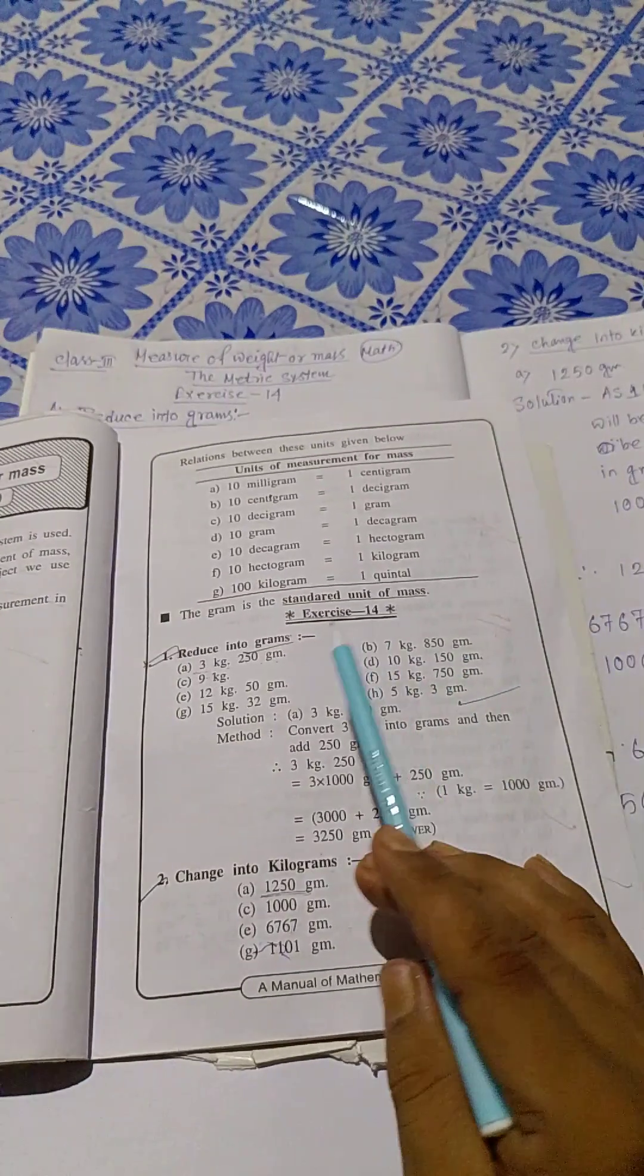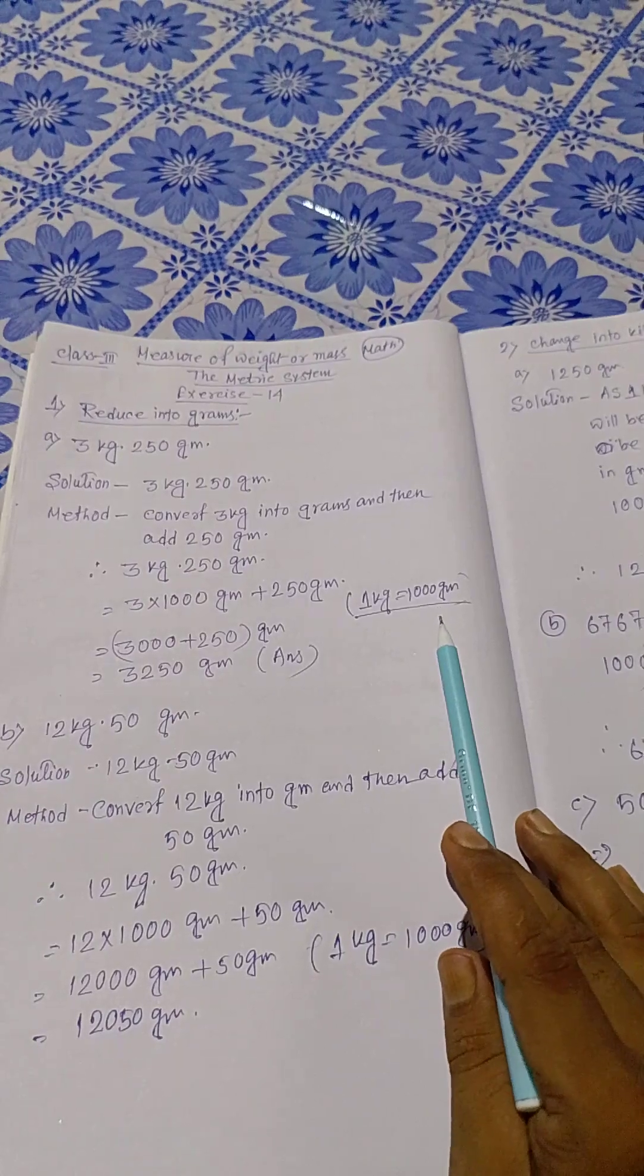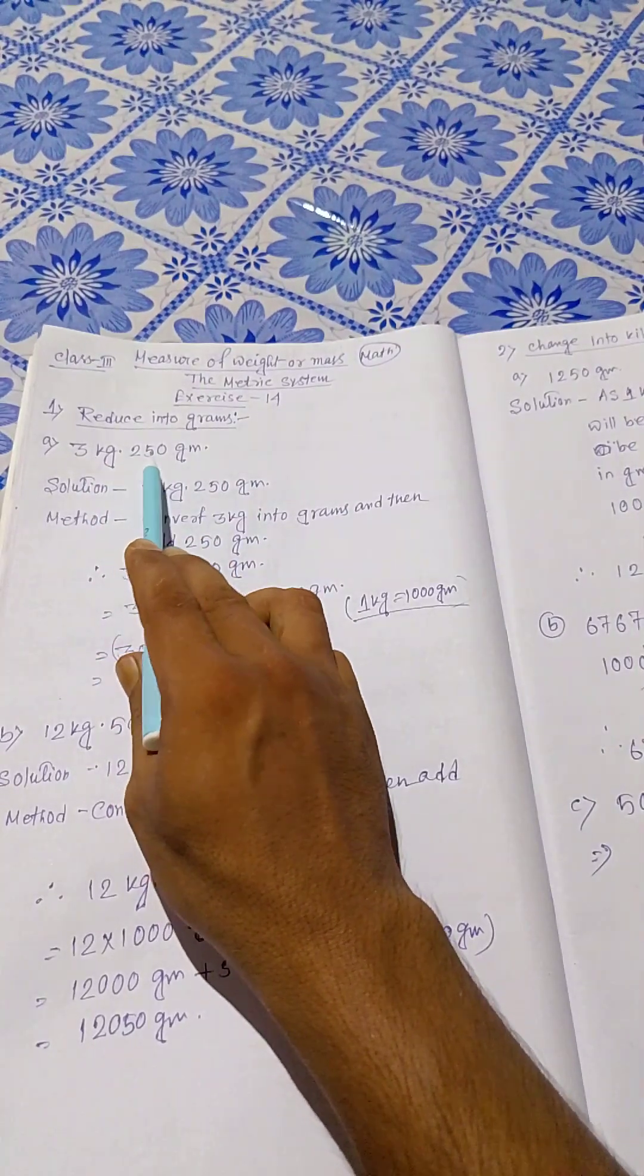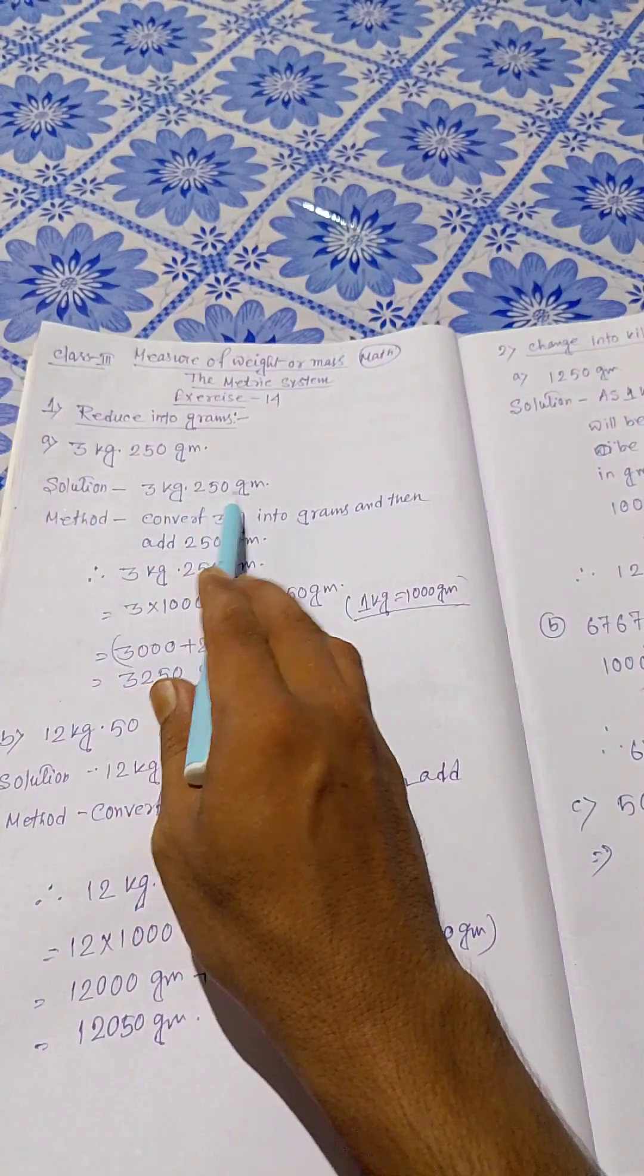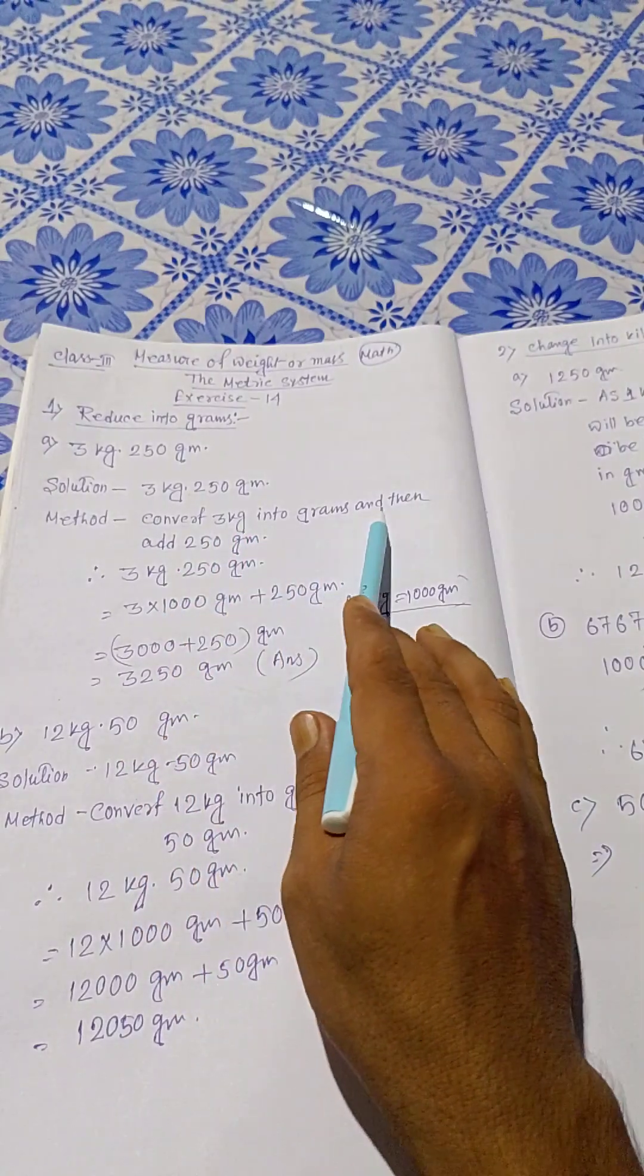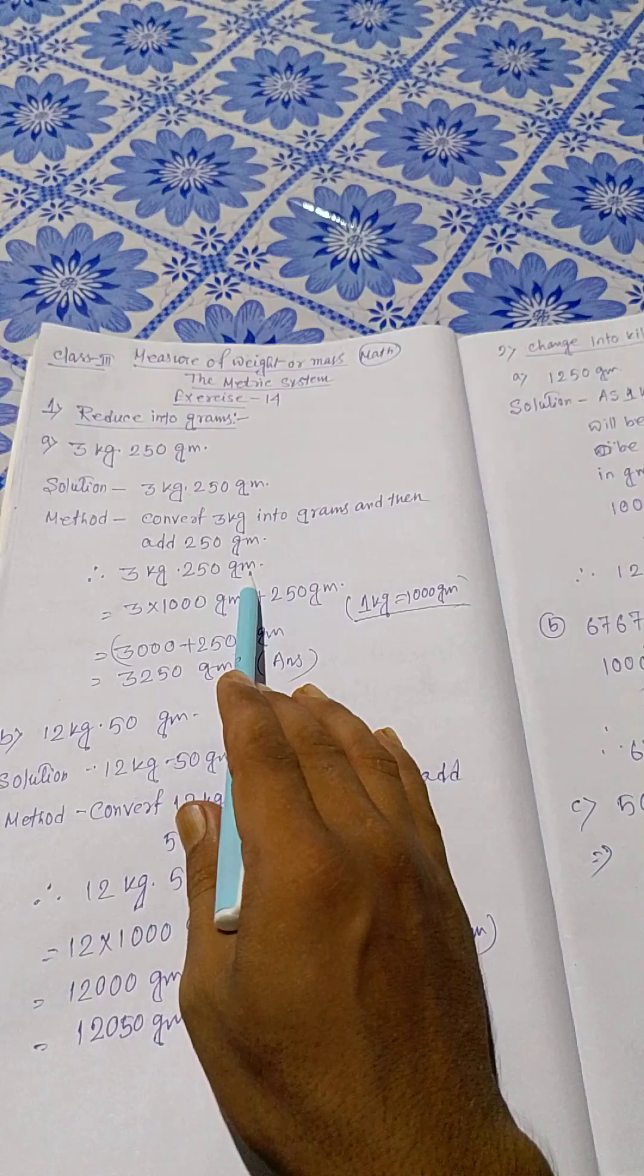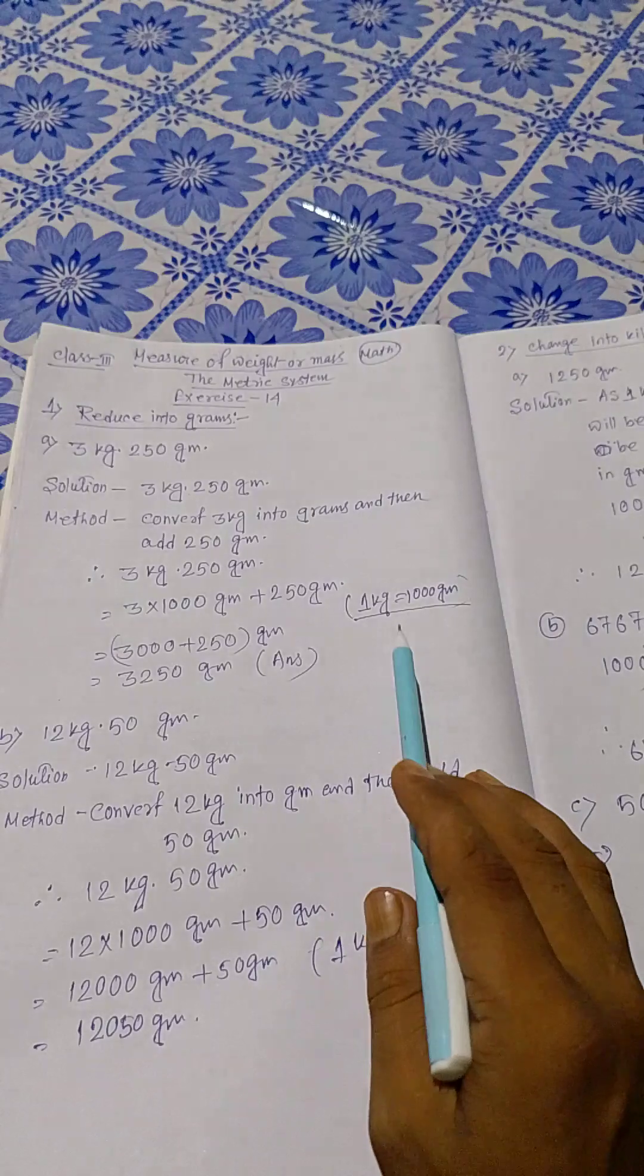Exercise 14: reduce into grams. 3 kg 250 grams. Solution: 3 kg 250 grams. Method: convert 3 kg into grams and then add 250 grams. 3 kg 250 grams equals 3 times 1000. We know 1 kg equals 1000 grams.